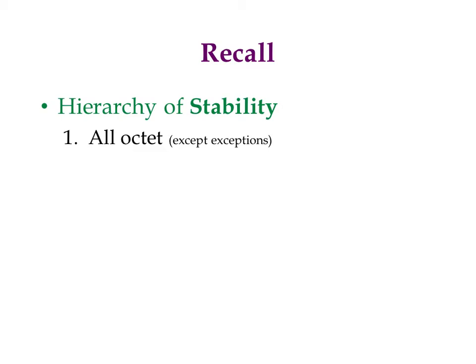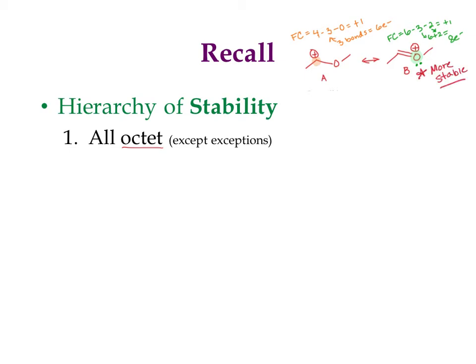The number one most important thing for a Lewis dot structure is that it's all octet. If possible, forms that are all octet are going to be more stable than any forms that are not. For example, if I have one structure with a carbocation (C+) and another with O+, a carbocation only has six electrons, but oxygen plus has eight electrons — it's all octet. So the one with O+ would be better than the C+ because it is all octet.